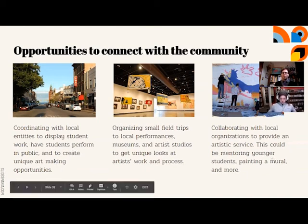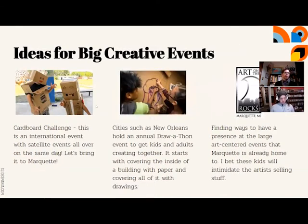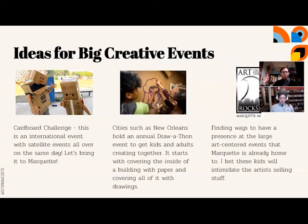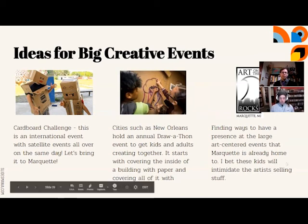We want to look at providing artistic services to entities in the community — maybe mentoring younger students or painting a mural. For big events, some ideas we've seen elsewhere that we think could happen here: the Cardboard Challenge, a viral video called Cane's Arcade — highly recommended, you might need a tissue — draw-thons where they cover walls of a building with brown butcher paper and sharpies, and having a presence in already-established large events in the area.